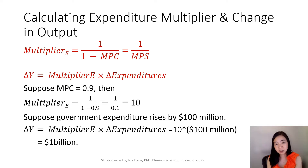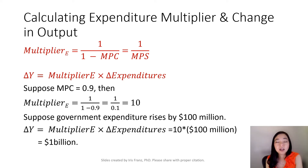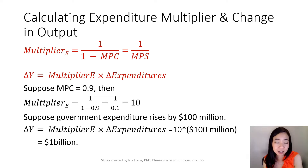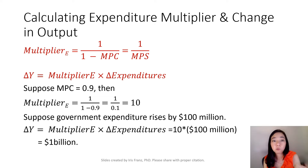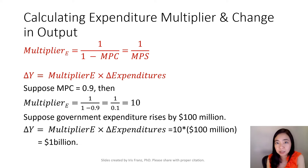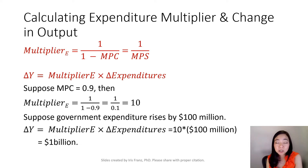Now the change in GDP is equal to the expenditure multiplier times the change in expenditure. Suppose our MPC is equal to 0.9. Then our expenditure multiplier will be equal to 1 divided by 1 minus 0.9, or 1 divided by 0.1, which is equal to 10. So your expenditure multiplier will be equal to 10 if your MPC is equal to 0.9.